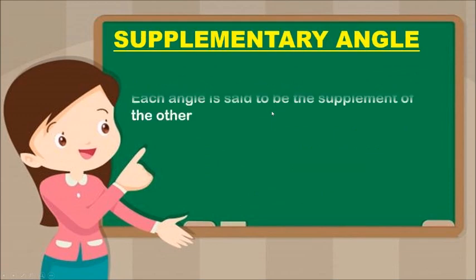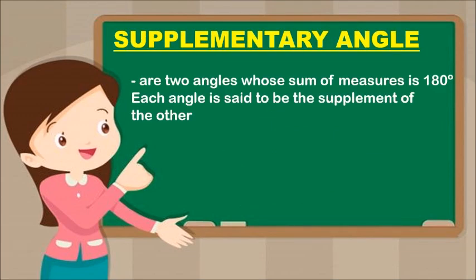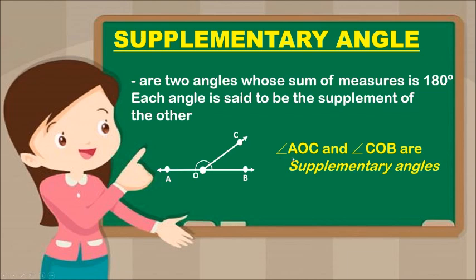Next is Supplementary Angle. Supplementary angles are two angles whose sum of measures is 180 degrees. Each angle is said to be the supplement of the other. Angle AOC and Angle COB are supplementary angles. When you add them, the total is 180 degrees.